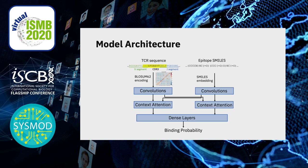Let me quickly present the model architecture. It is a bimodal model, so we have two inputs: the T cell receptor sequence and the epitope, and we perform several calculations before integrating the information into the dense layers. The T cell receptor sequence is inputted as an amino acid sequence, and we use the BLOSUM62 matrix as an encoding, which is a very established method based on phylogenetic analysis of which amino acids usually replace each other.